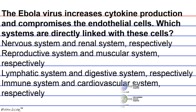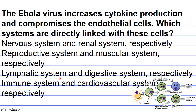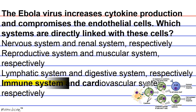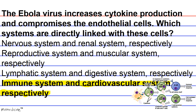Cytokines can be released by lymphocytes. Endothelial cells are simple squamous cells that line blood vessels. Hence, lymphocytes belong to the immune system and blood vessels are part of the cardiovascular system. Thus, the immune system and cardiovascular system would both be affected. The answer is D.